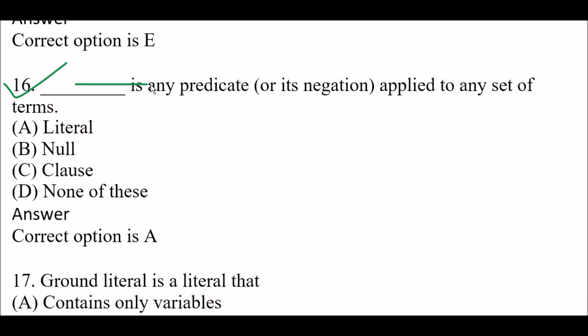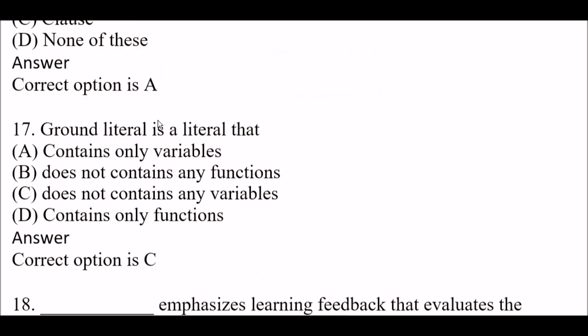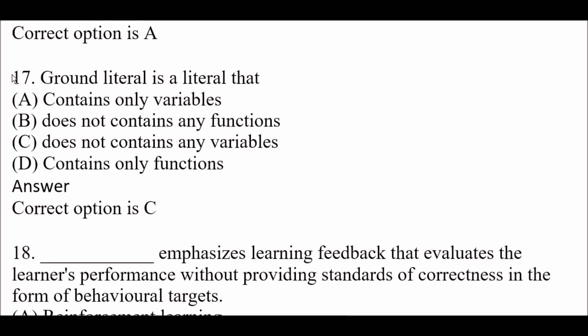Blank space is any predicate or its negation applied to any set of terms. Option A: Literal. Option B: Null. Option C: Clause. Option D: None of these. Right answer is Option A — Literal. Next question: Ground literal is a literal that — Option A: contains only variables; Option B: does not contain any functions; Option C: does not contain any variables; Option D: contains only functions. Right answer is Option C — does not contain any variables. Ground literal is a literal that does not contain any variables.